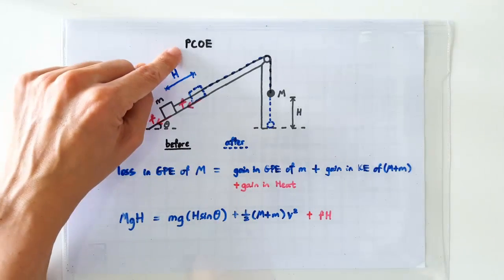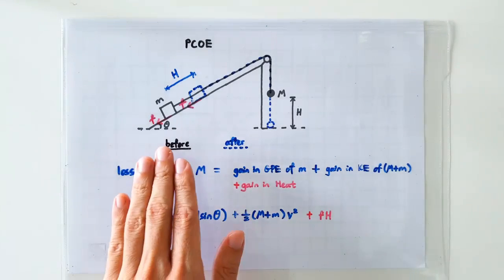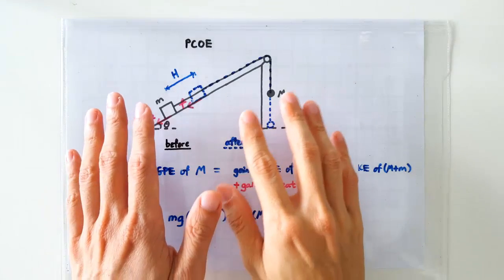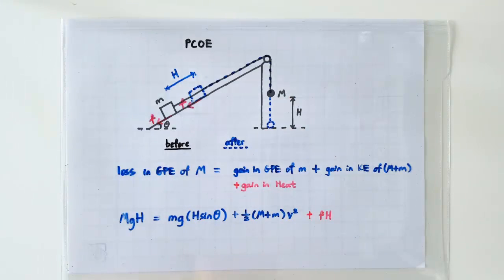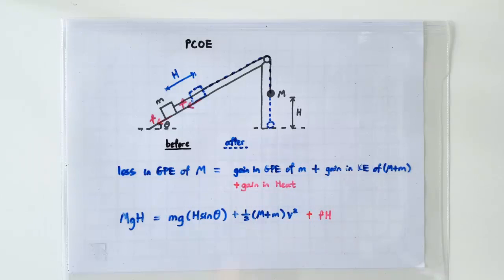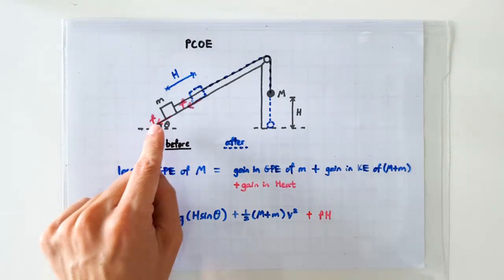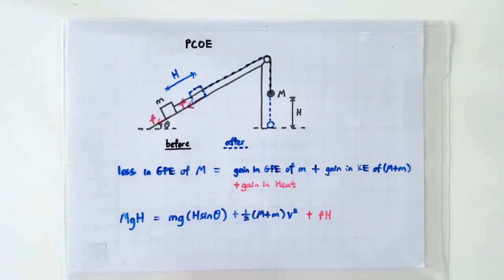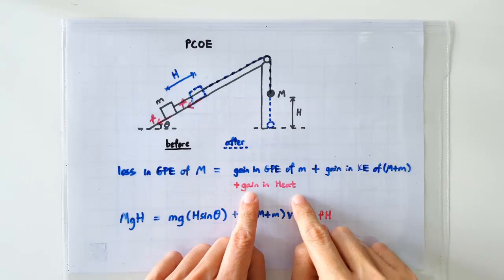So this is how the game is played. Identify a before and after instance, where the total energy of the system is constant, equate the losses and the gains, and if frictional force is involved, include it as a form of gain in heat.